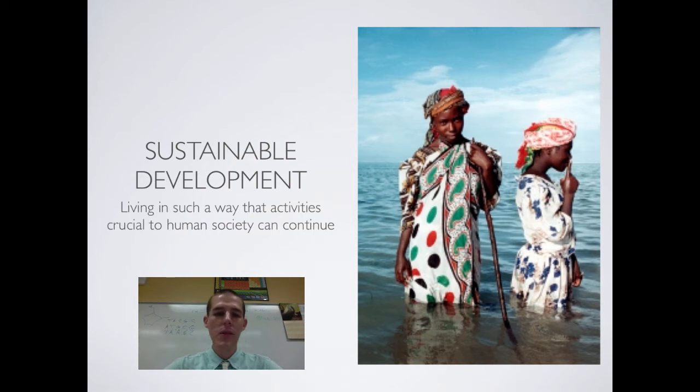Talking more about sustainable development, if we were to talk about developing sustainably, it's living in such a way that activities crucial to human society can continue. So this would mean that as we develop, as we build, as we grow as a human society, we need to make sure that the water cycle is able to keep running properly, that we are not putting out so much pollution that the trees and air cannot take care of it, that we are not fishing the ocean so heavily that there will no longer be any seafood available. So with an eye towards sustainable development, we just need to make sure that we're taking care of things in such a way that they are still there for future generations.